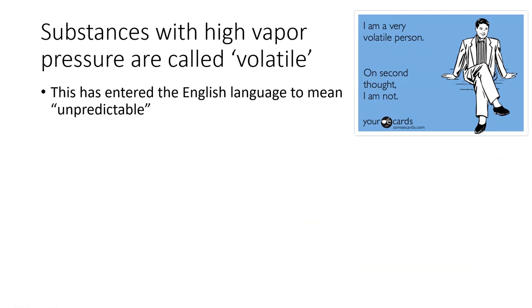Two more things about vapor pressure before we wrap up this lesson. First, substances with high vapor pressures are called volatile. These substances have weak IMFs holding them together, thus they vaporize easily. The word volatile has entered the English language to mean explosive or unpredictable, because liquid hydrocarbons like gasoline have weak IMFs, vaporize easily, and explode upon contact with flame.